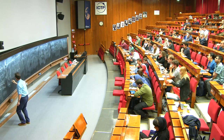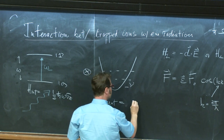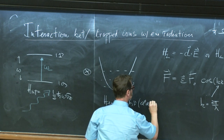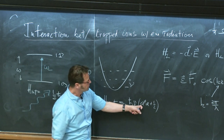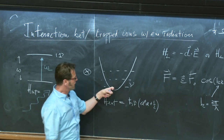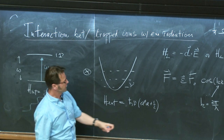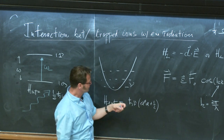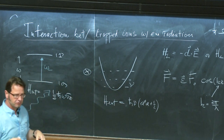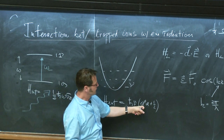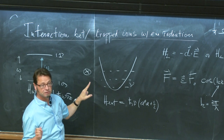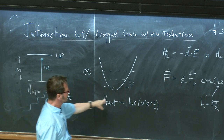Here we have the internal Hamiltonian and here we have the external Hamiltonian — this is just a quantum mechanical harmonic oscillator. So we have H-bar times nu times A-dagger A plus one-half, where A-dagger is the creation operator and A is the annihilation operator for the harmonic oscillator. The creation operator creates one quantum of excitation and the annihilation operator gets rid of one quantum of excitation.